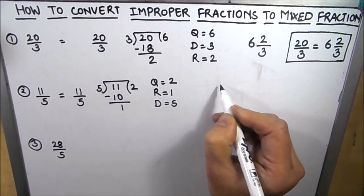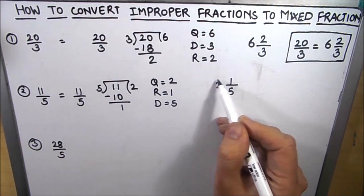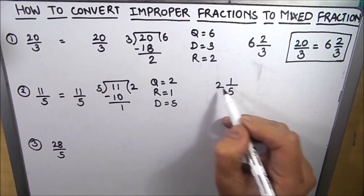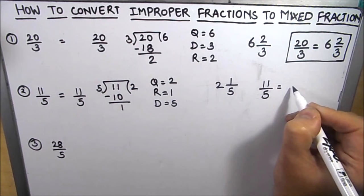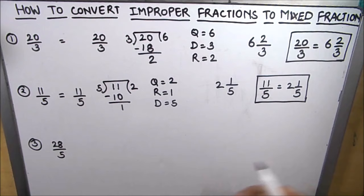So our mixed fraction will become 2, which is the quotient part, 1 over 5. You need to take care here that you have to first write the quotient as a separate number and the remainder part you have to write in fraction. So our 11 over 5 improper fraction is now 2 and 1 fifth. That means 2 whole parts and 1 fifth fraction part. So this is our mixed fraction for 11 over 5.